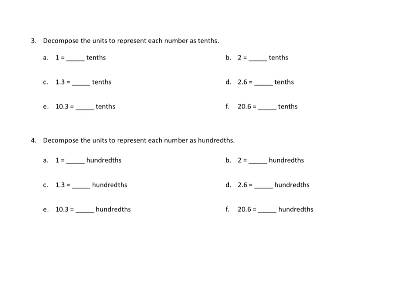I'm going to do parts of three and four here. Number three asks us to decompose the units to represent each number as tenths. So I'm going to take 3C. We have 1.3, so one whole and three tenths. We could take our whole and decompose it into tenths. That would be ten tenths. And we already have three other tenths. So that would be ten tenths plus three tenths are thirteen tenths.